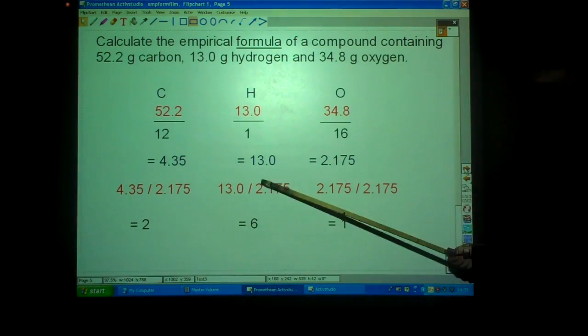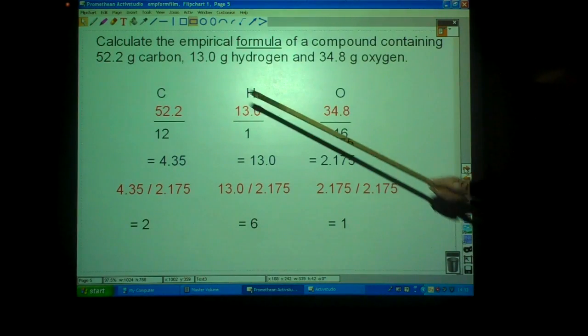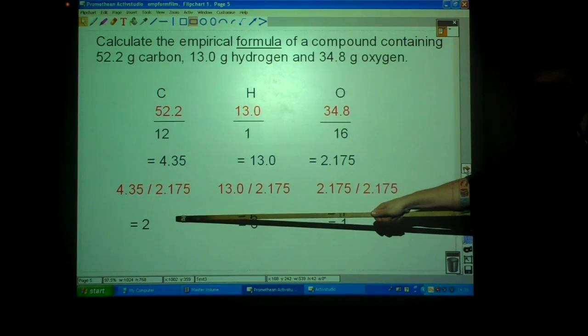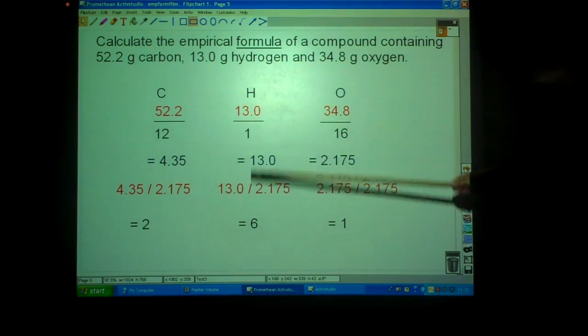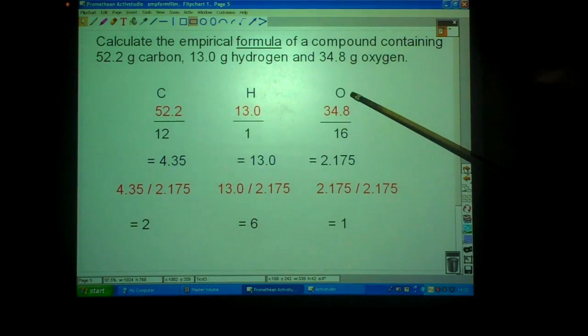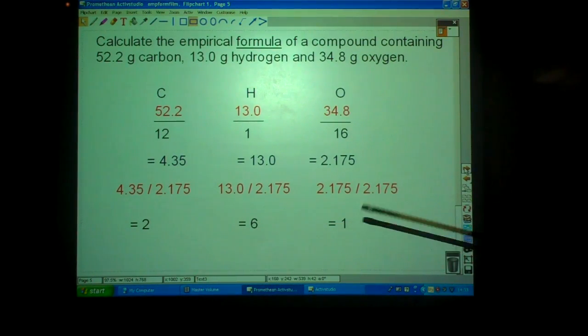That gives us 2, 6 and 1. So, at the end of the carbon column we have a 2, at the end of the hydrogen column we have a 6 and at the end of the oxygen column we have a 1. To get the final mark in the exam you have to turn it into a chemical formula.